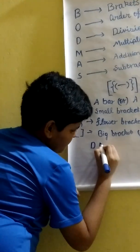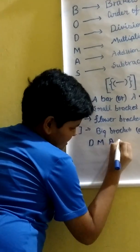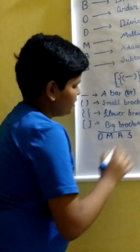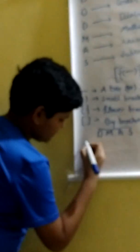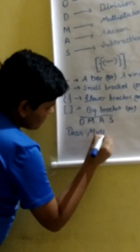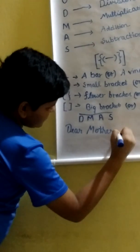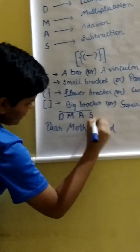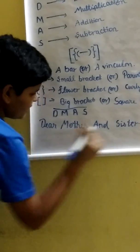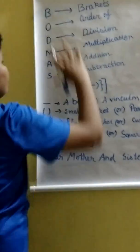D, M, A, S. If you want to remember this order, you can write D as deer, M as mother, A as and, S as sister. Dear Mother And Sister. This is the BODMAS rule.